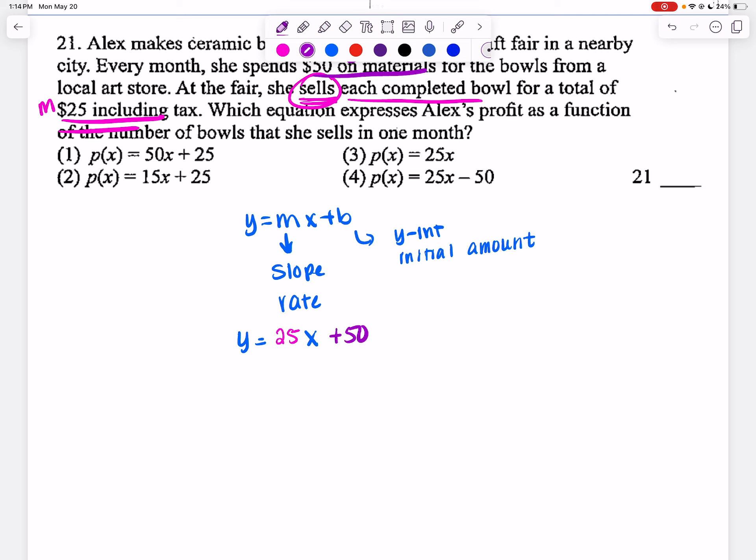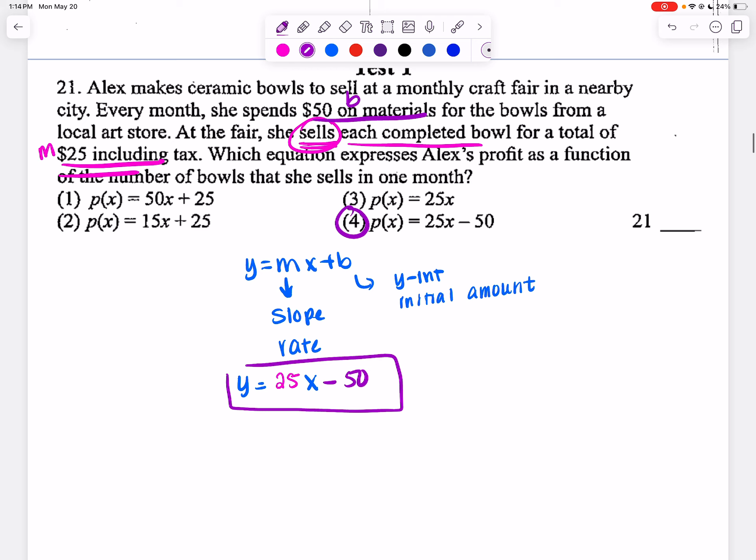But if I look at choice 4, it says 25X minus 50, which is correct. If you think about it, she's spending $50 before she even sells the bowls. So the equation that would best represent this is choice 4.